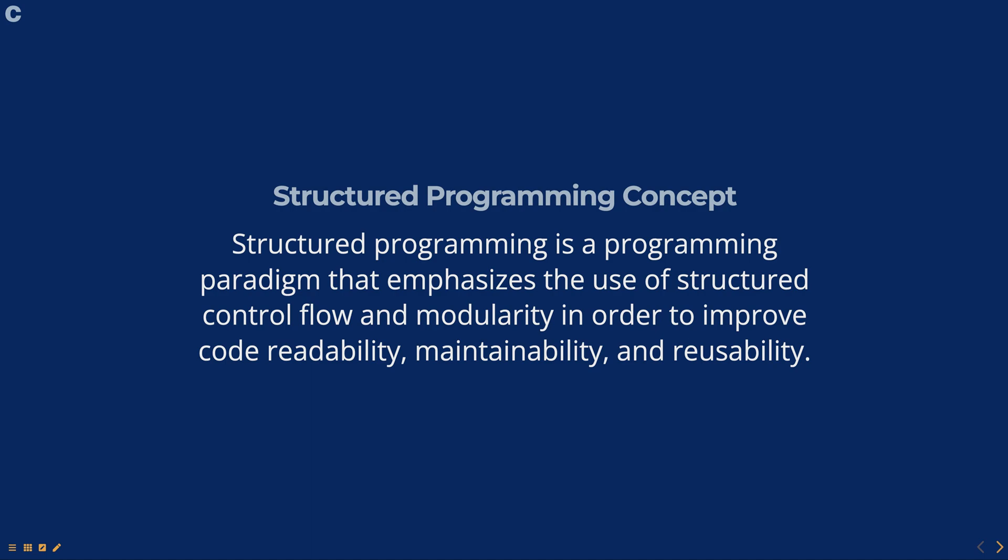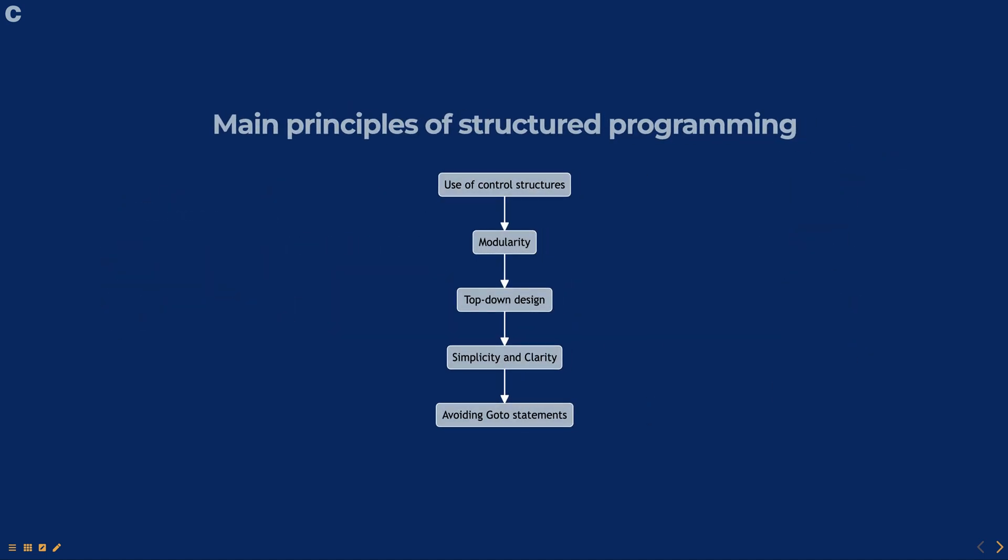The main principles of structured programming are use of control structures. Structured programming uses control structures such as loops, conditionals, and functions to control the flow of execution in a program. This makes the code easier to understand and maintain.